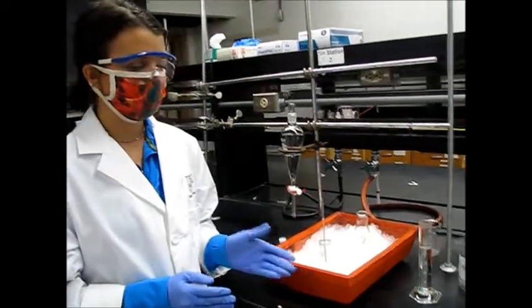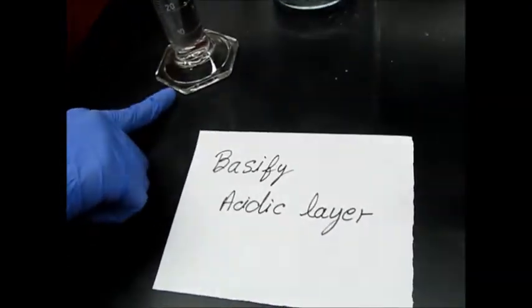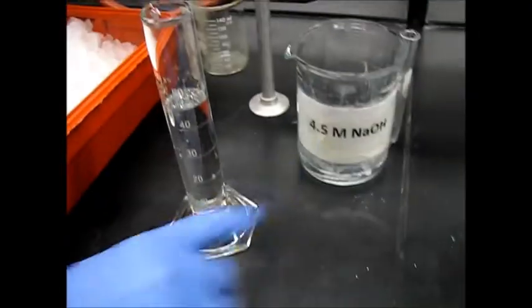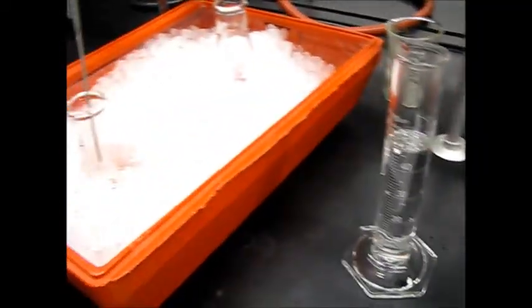We will start by basifying our acidic layer. We will take a little over 45 milliliters of NaOH 4.5 molar and add it to our acidic layer slowly.